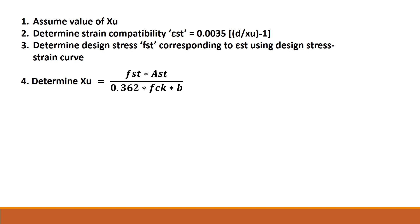Next, we determine the value of XU from the equation XU equal to FST into AST, which is equal to T divided by 0.362 FCK B, which into XU is equal to compression load C.